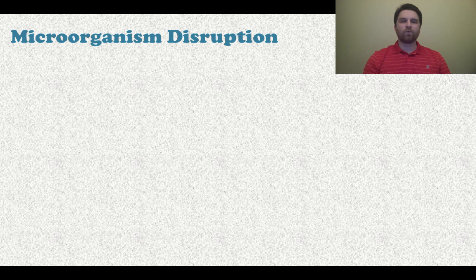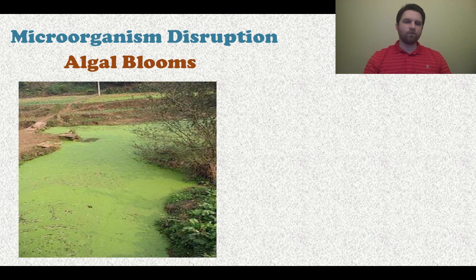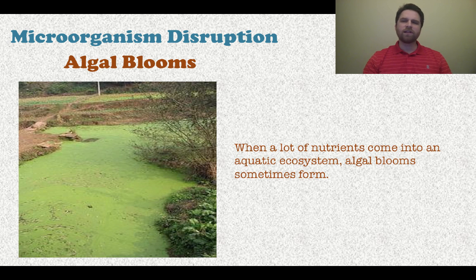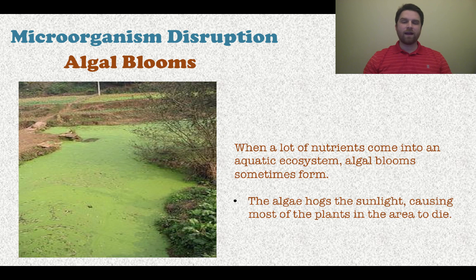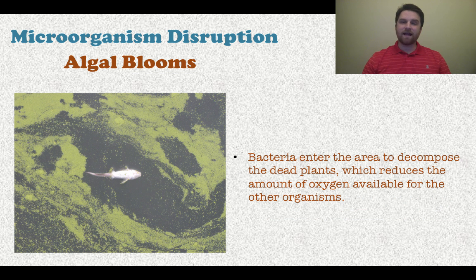Now let's talk about how microorganisms can disrupt an ecosystem. The main example is algal blooms. When there's a large amount of nutrients entering an aquatic ecosystem, you can get these algal blooms. The algae hog all the sunlight, causing most plants in that area to die. Then bacteria that eat the dead plants decompose them, reducing the amount of oxygen available for other organisms. As you can see in the picture, there's a dead fish because it didn't have enough oxygen due to the algae.